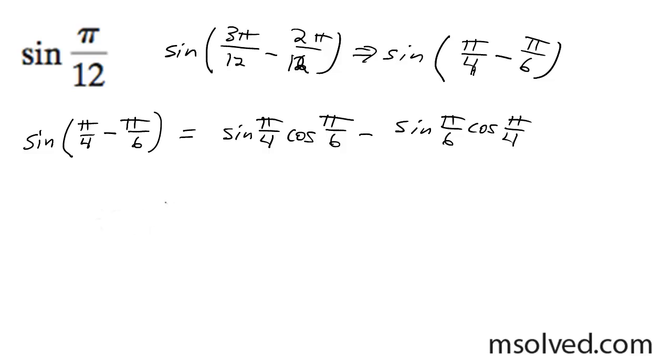Sine of π over 4 is equal to √2 over 2. Cosine of π over 6 is equal to √3 over 2.